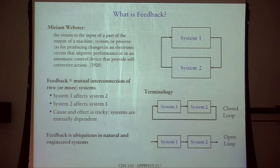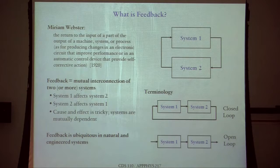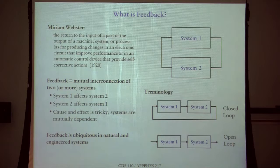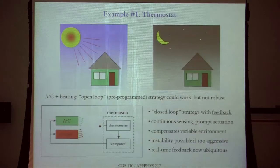Feedback systems can be complicated to analyze because in these closed-loop configurations system one affects system two and system two affects system one again. As a physicist you might say these are just coupled systems, but for control theory we don't consider arbitrary interactions — we have in mind a loop where system one has an output signal that drives system two, and the output of system two comes back to drive system one. There's a directionality to the information flow that distinguishes feedback interconnection from general physical coupling.